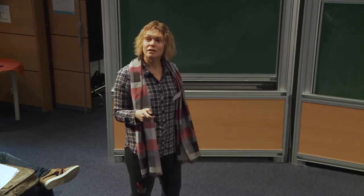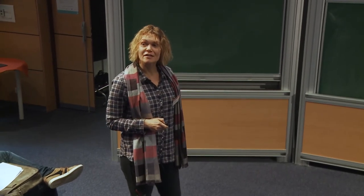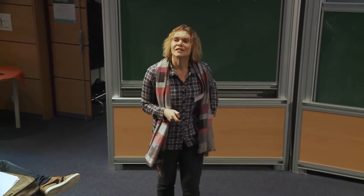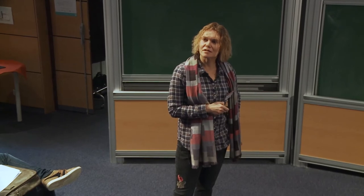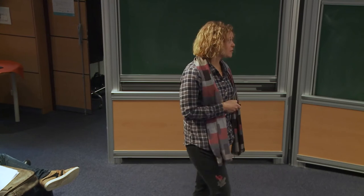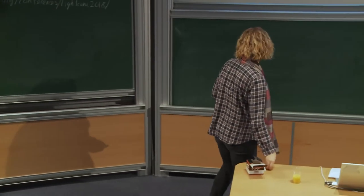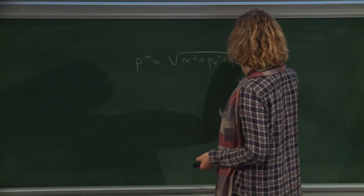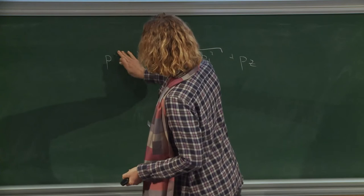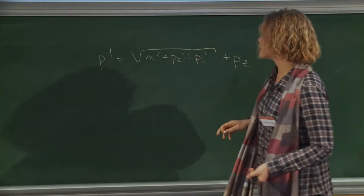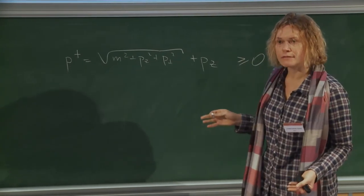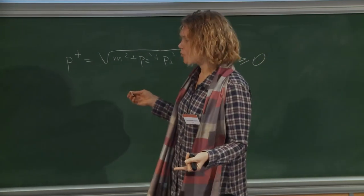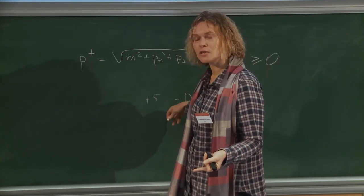Why is the vacuum trivial in the light front? Because the light front momentum P⁺ is always positive — we never have negative momentum. So you cannot create vacuum fluctuations from, say, +5 and -5 momentum. There is no such thing; it's always non-zero. So the vacuum is the empty state. We're trying to obtain the one-particle excitations. Because we truncate the projection only to the three-body state, we terminate the Baker-Hausdorff expansion for the effective Hamiltonian, keeping only up to two-particle creation.